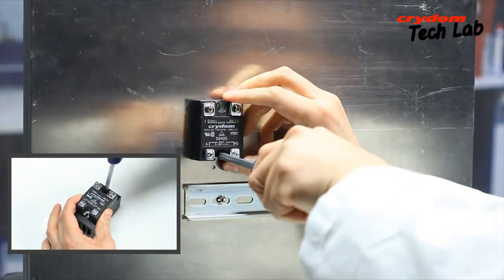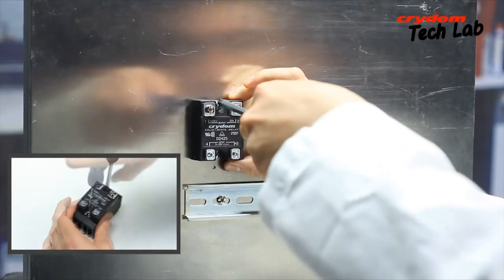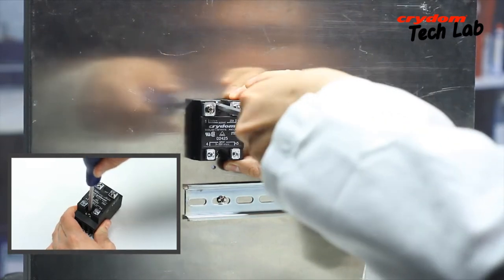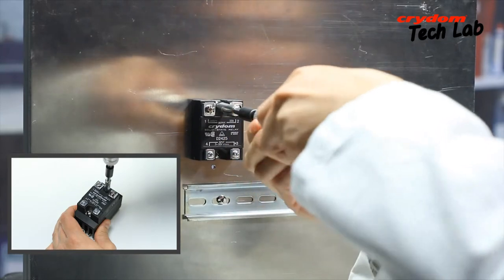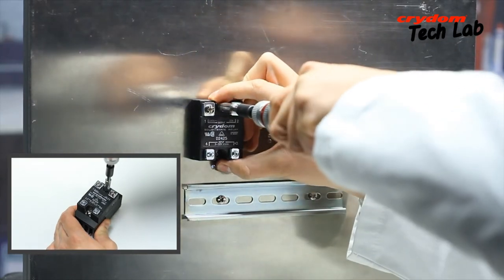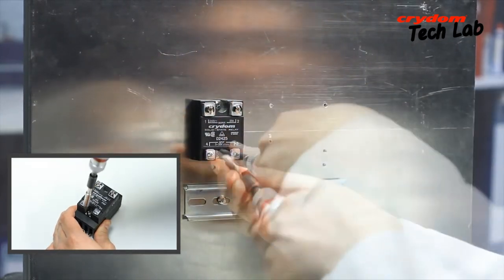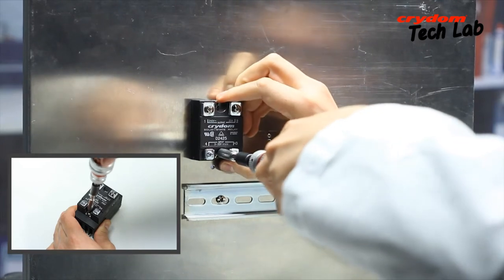It is recommended that the screws be lightly tightened by alternating between them until snug. Once snug, use a torque wrench to tighten them to the specified torque. Refer to the specific SSR data sheet available on the website for the recommended values.